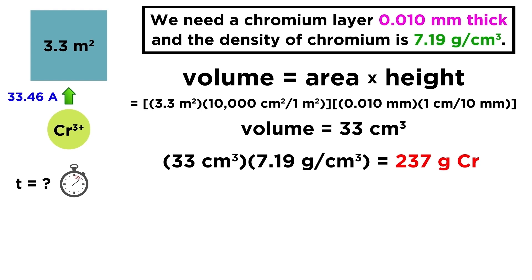That's the mass of chromium needed to generate the layer. Then we can use the molar mass of chromium to get the moles of chromium atoms this represents. 237 grams times 1 mole for every 52 grams gives us 4.56 moles of chromium atoms.